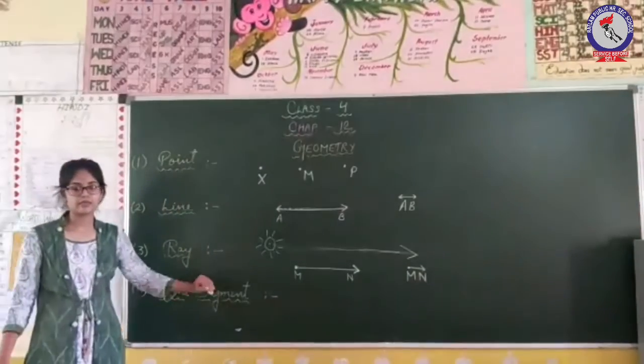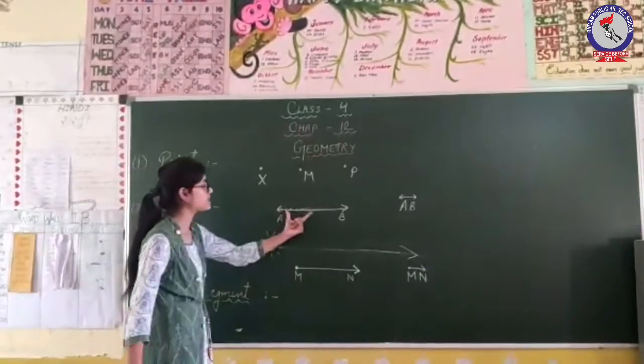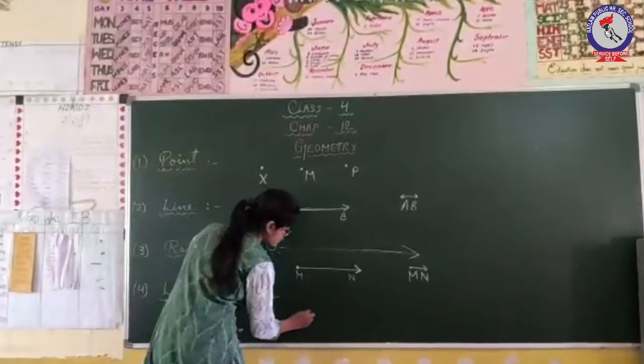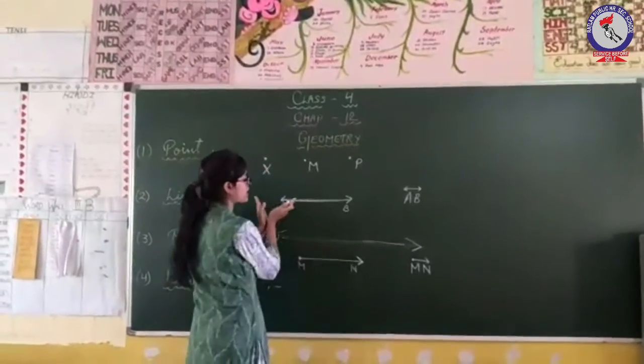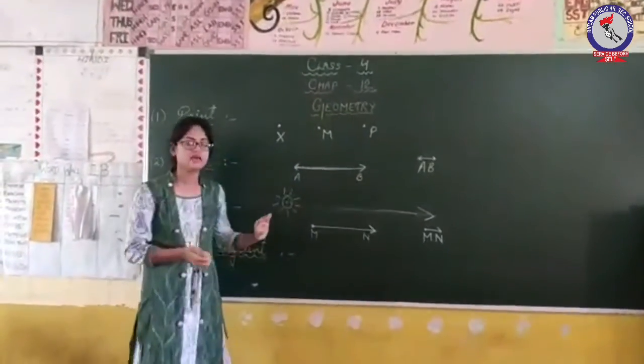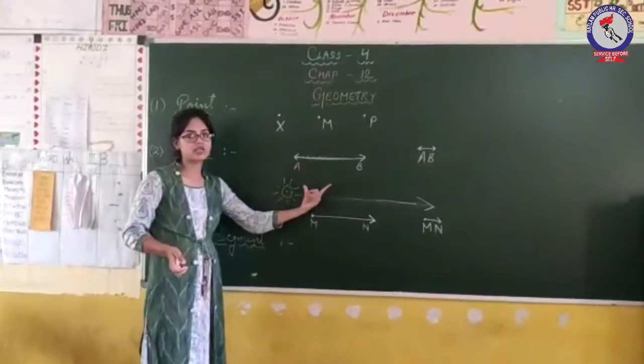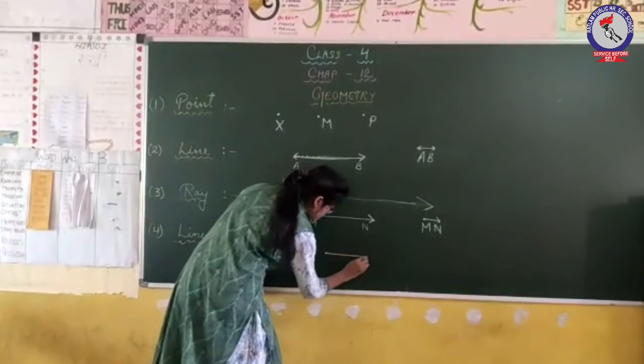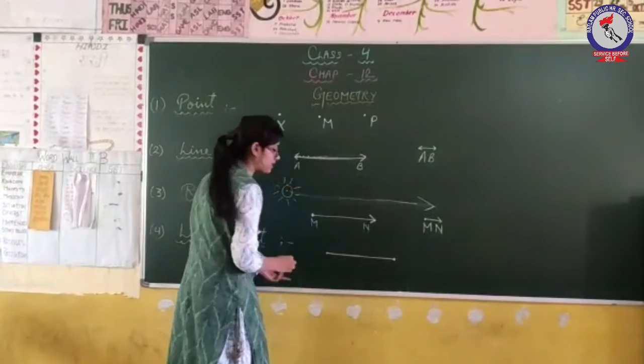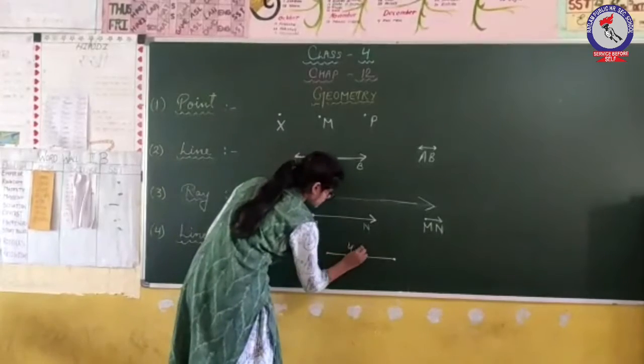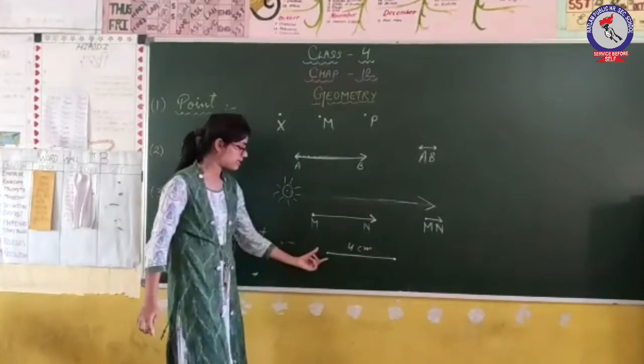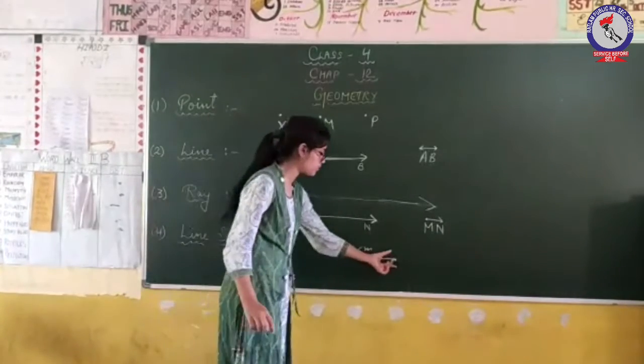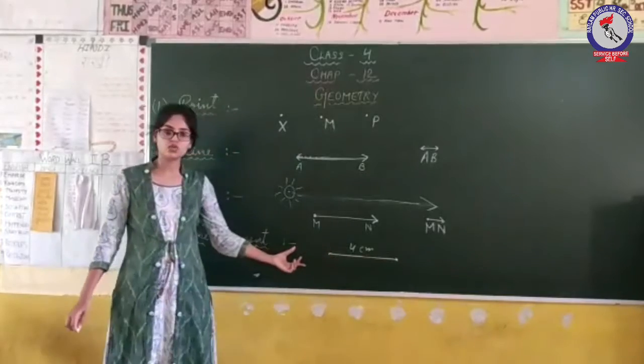Then the last one is line segment. The line segment is a part of the line. For example, we have a four-centimeter line segment. The line segment has a definite length.